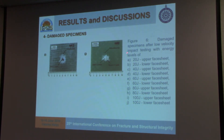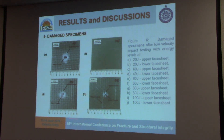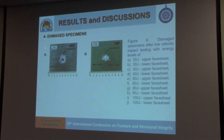For 100 joules, the impacted area on the lower face sheet was increasing with the increase in energy level. We observed delamination, fiber cracks, and matrix cracks on the lower face sheet. On the upper face sheet, we again saw delamination and fiber cracks. The impacted area was increasing with energy level on both the upper and lower face sheets.